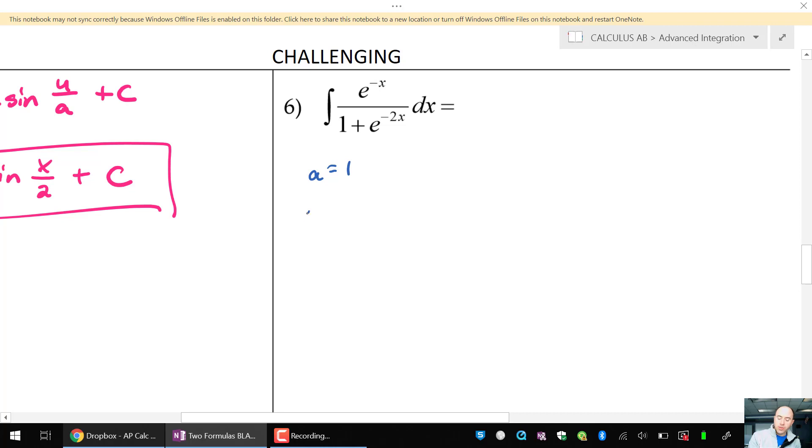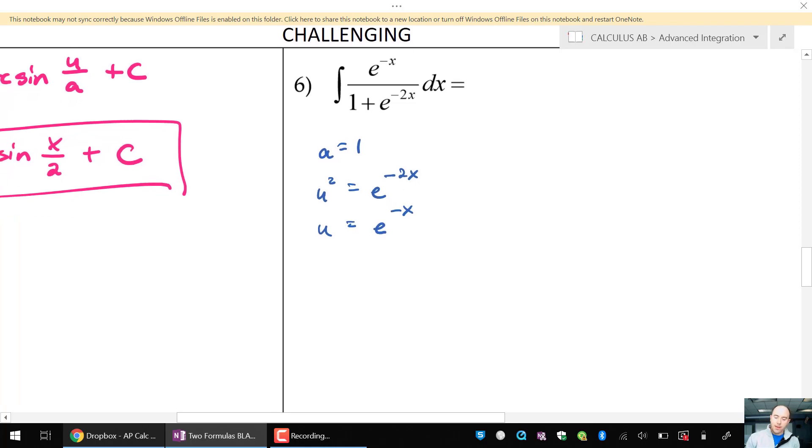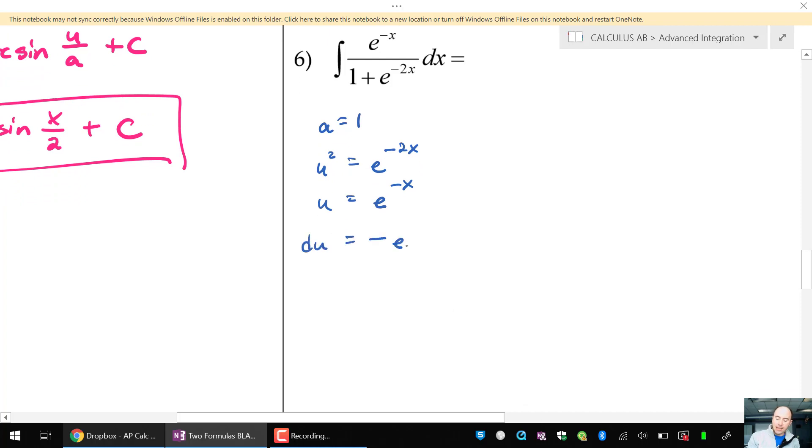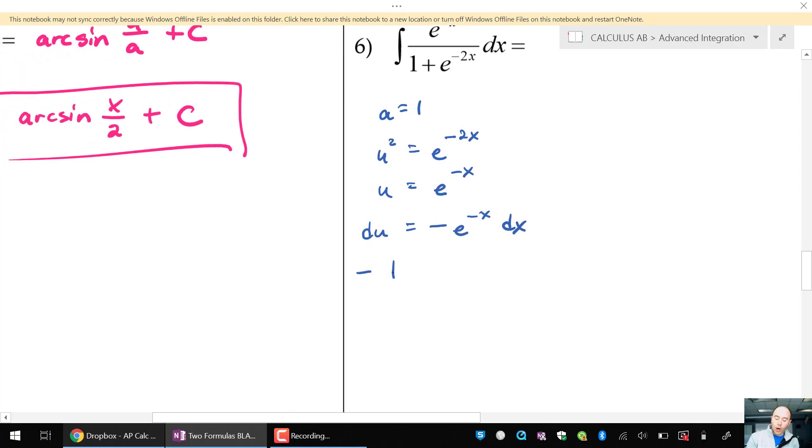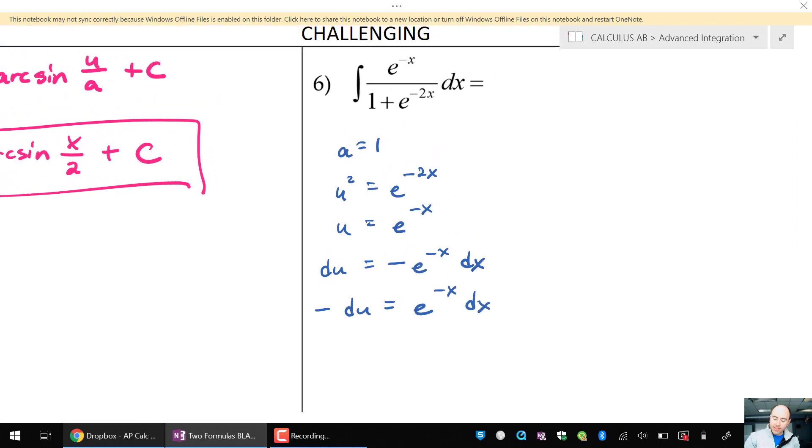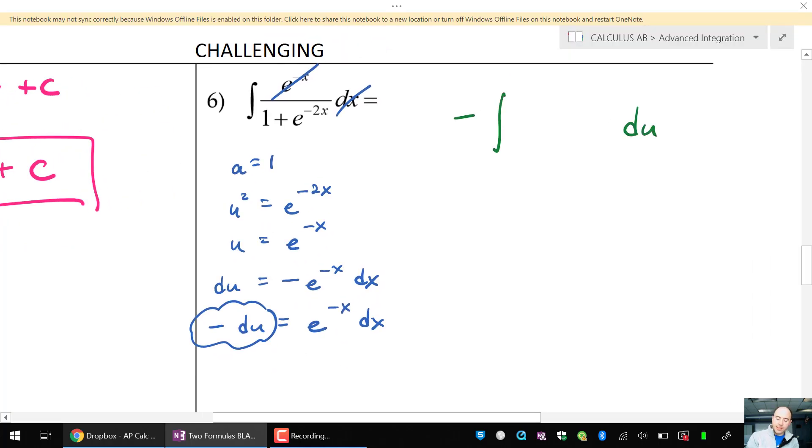So let's begin. a is going to be 1. u squared is e to the negative 2x. So regular u, if I raise both sides to the power of one-half, taking the square root, will be e to the negative x. So the derivative here, du, is negative e to the negative x. And if I divide by negative 1, there's my substitution that will get me a 1 in the numerator of this integral. So let's see how I can use a negative du to replace e to the negative x dx. Negative 1 times du in there. I'm going to have a 1 over a squared plus u squared. 1 over a squared plus u squared. And that's the arctangent formula.